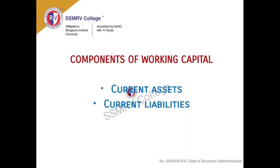The second type is net working capital — it's calculated by subtracting current liabilities from current assets. If there is any leftover excess, you can term that net working capital. It indicates the excess of current assets over current liabilities. The third is positive working capital, where current assets are greater in quantity and value compared to current liabilities. The fourth — negative working capital — is the opposite: when current liabilities exceed current assets, that negative situation is called negative working capital.